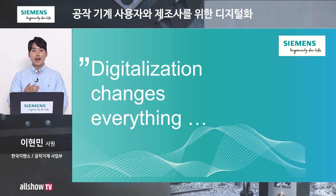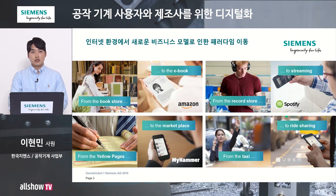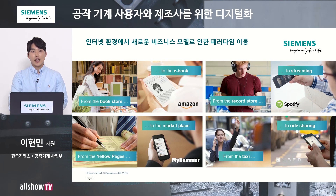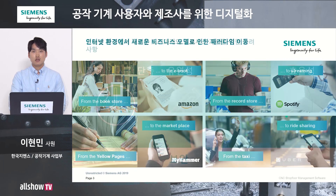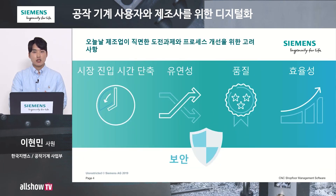디지털화는 다양한 곳에서 우리의 삶을 상당한 부분 변화시키고 있습니다. 과거에는 책을 사려면 서점에 가야 했지만 지금은 온라인으로 주문하거나 전자책을 구매합니다. 또한 스트리밍 서비스가 보편화되면서 매달 약간의 비용으로 언제 어디서든 다양한 컨텐츠를 즐길 수 있습니다. 공유경제 같은 새로운 비즈니스 모델의 출현으로 이러한 패러다임의 이동은 더욱 가속화되고 있습니다.